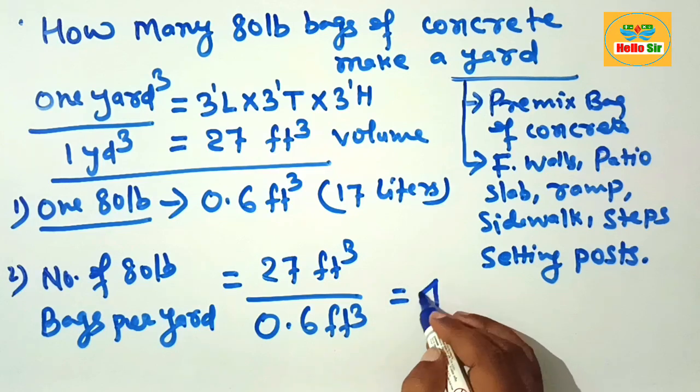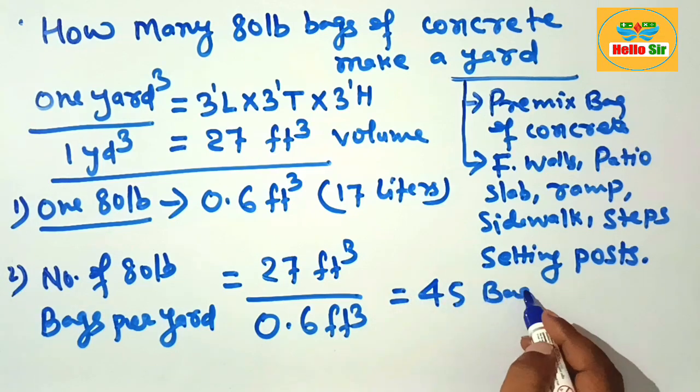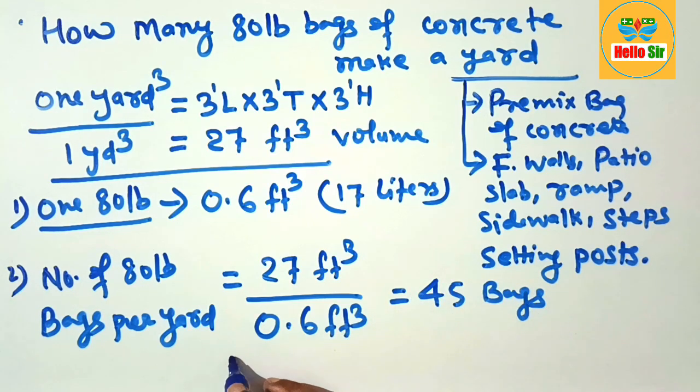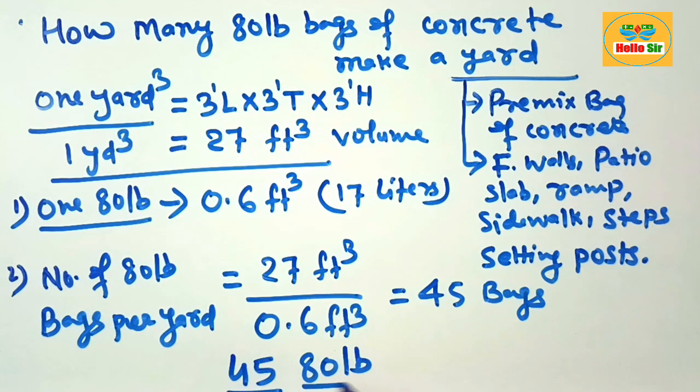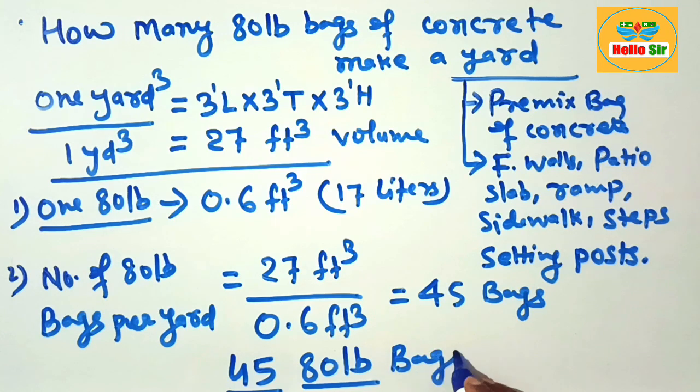this will come to about 45 bags. It means to produce one cubic yard of concrete, you need 45 80-pound bags of concrete.